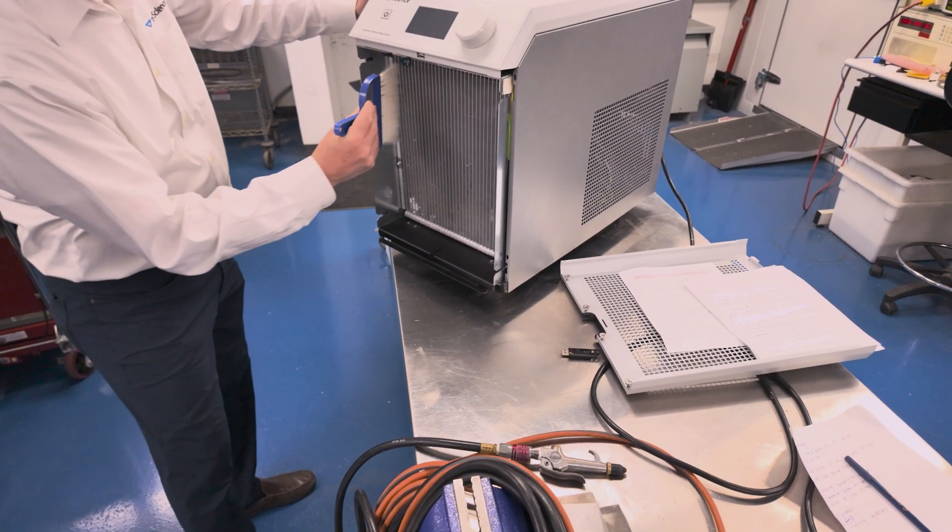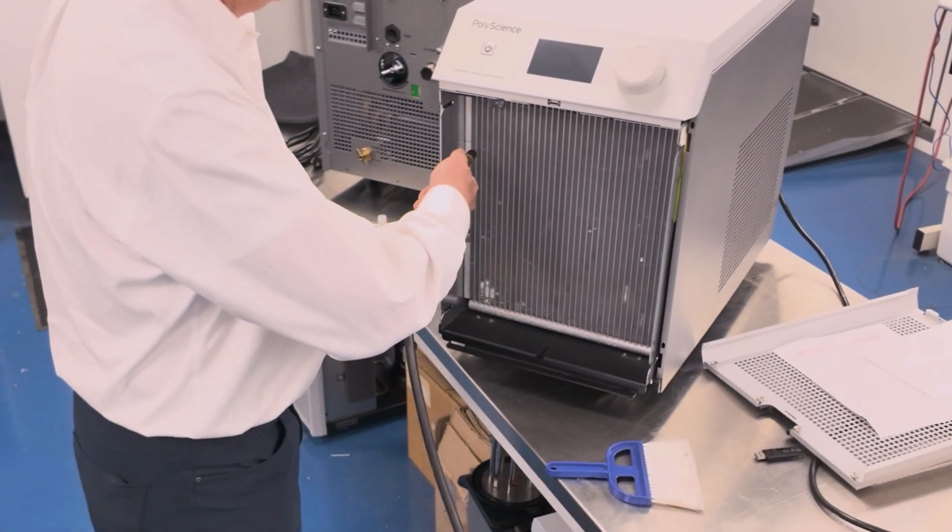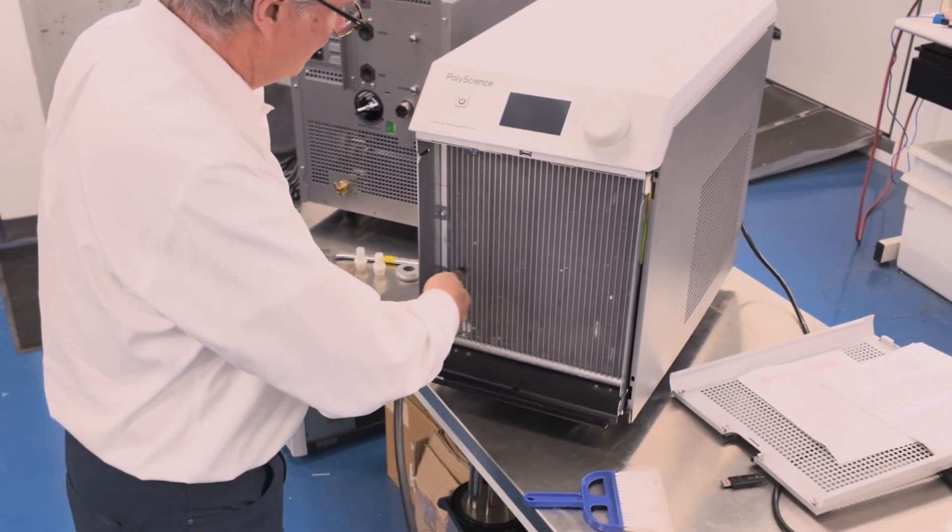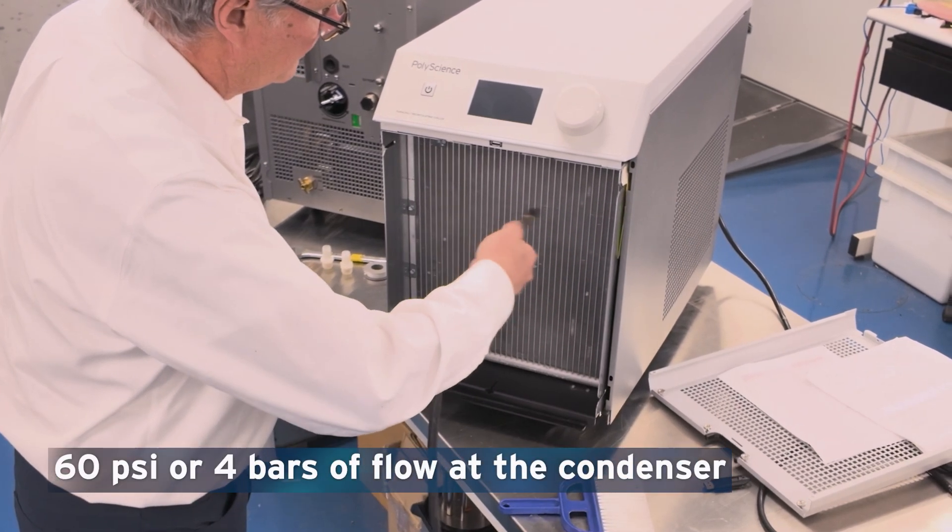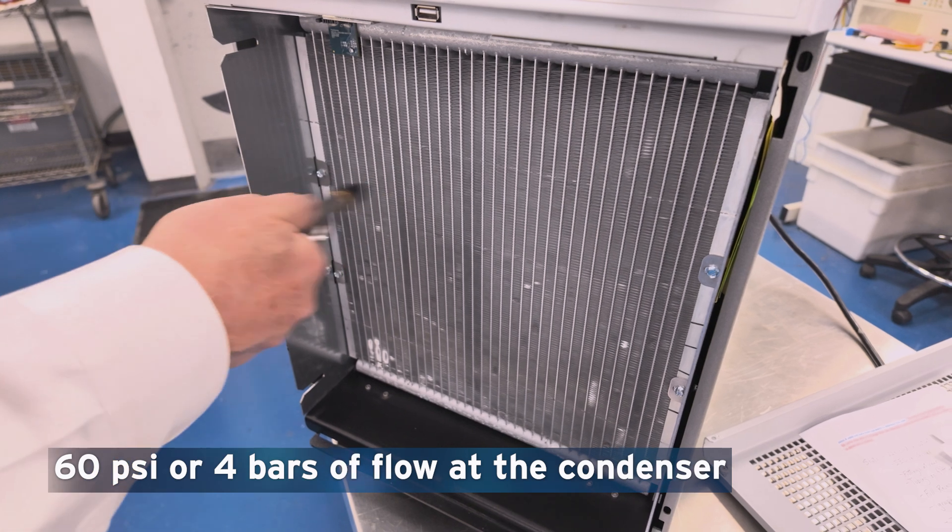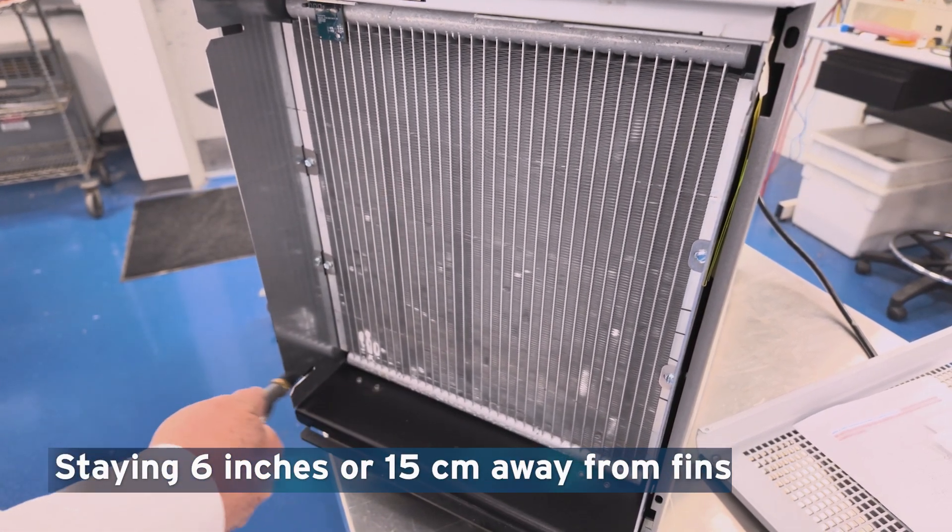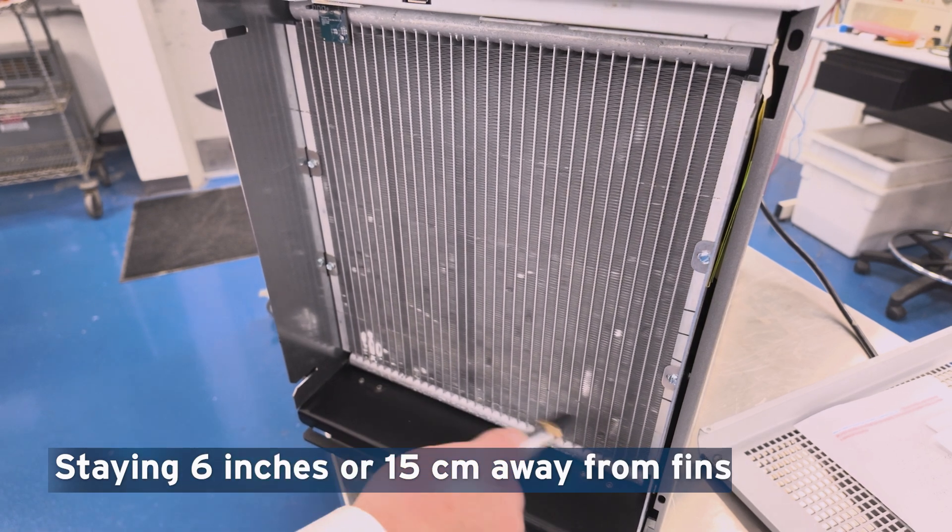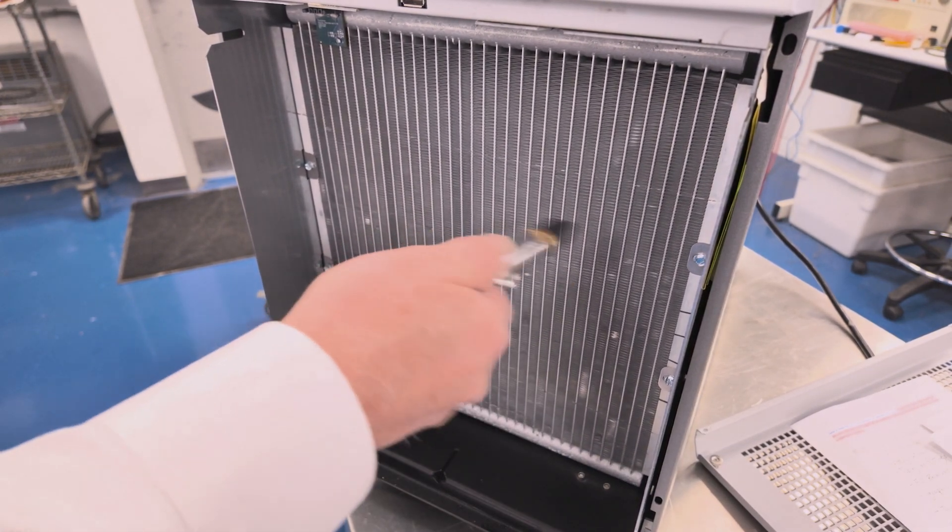To clean the condenser, use a soft brush and compressed air or non-flammable gas. Direct 60 psi or 4 bars of flow at the condenser, staying 6 inches or 15 centimeters away from the condenser fins. Use care not to bend the condenser fins.